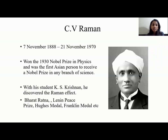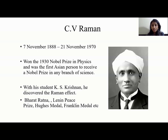C.V. Raman was born on 7 November 1888 and died on 21 November 1970. He won the Nobel Prize in Physics in the year 1930 and was the first Asian person to receive a Nobel Prize in any branch of science. With his student K.S. Krishnan, he discovered the phenomenon known as the Raman effect, and it is this discovery that won him the Nobel Prize in Physics. He has also won other awards like Bharat Ratna, Lenin Peace Prize, Hughes Medal, Franklin Medal, etc.